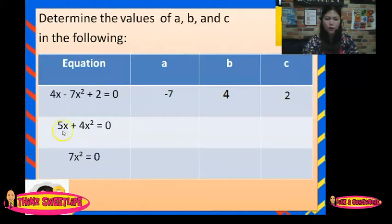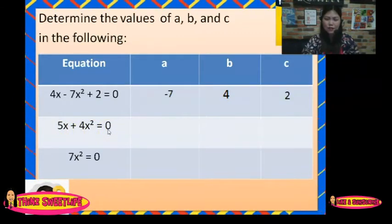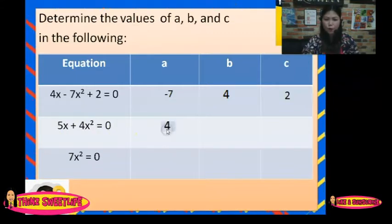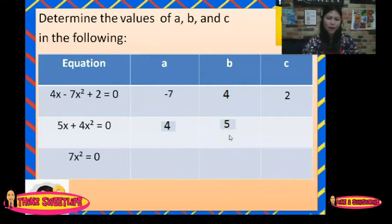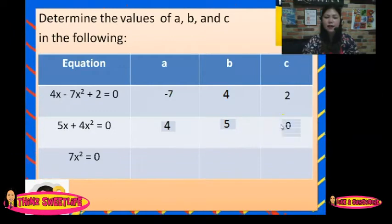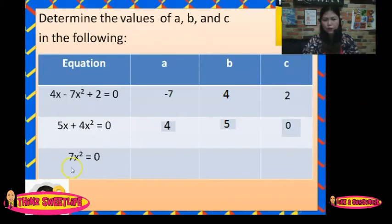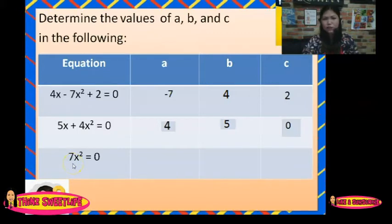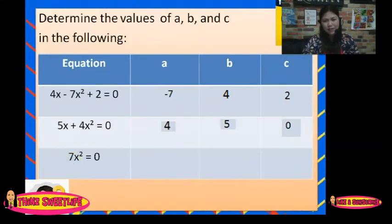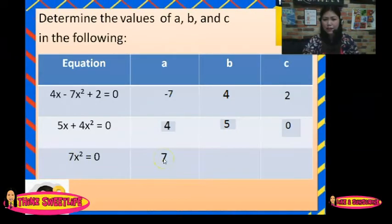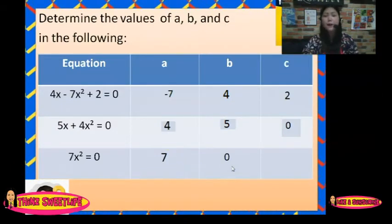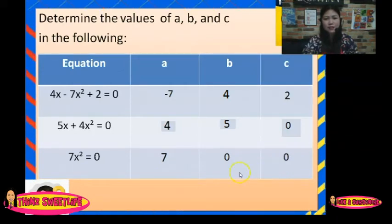How about the second equation? We have 5x plus 4x squared equals 0. The A here is 4, and B is 5, and C is 0. How about the third equation? We have 7x squared equals 0. The A is 7. B is 0 because there is no X term, and the constant C is also 0.